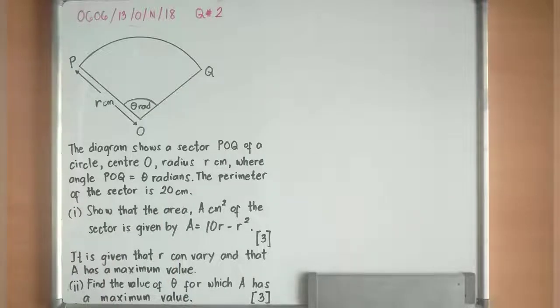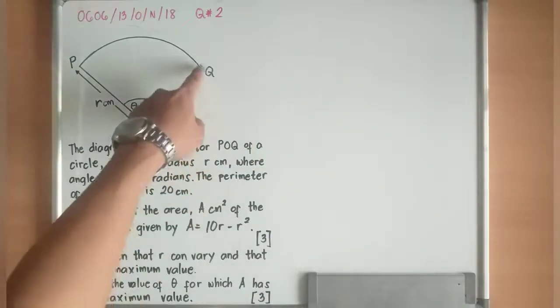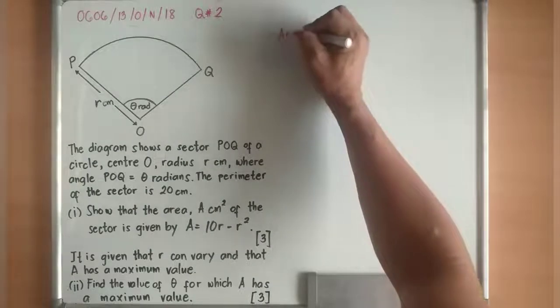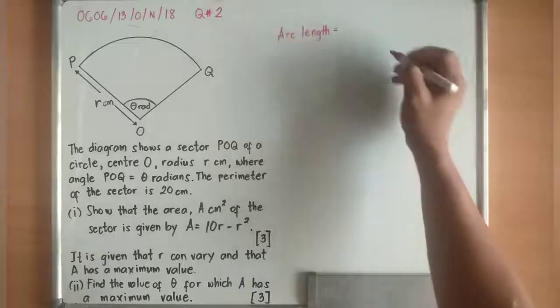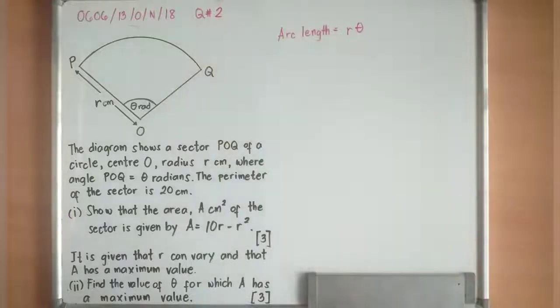The perimeter of the sector is 20 cm. When we say perimeter of a sector, it's always one radius plus another radius plus the arc length. Arc length is always R theta, where R is the radius and theta means the angle of the sector.